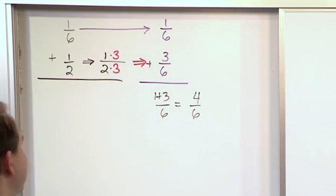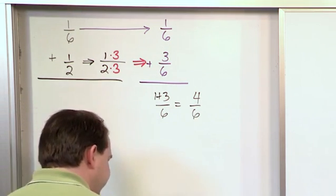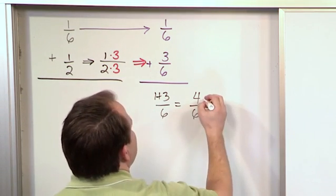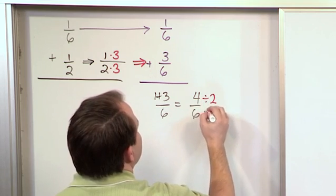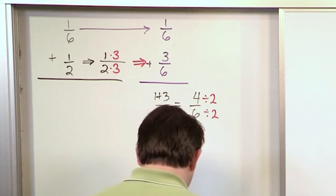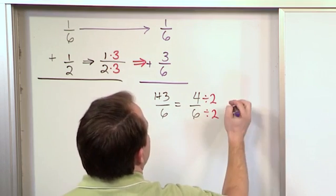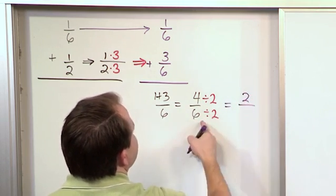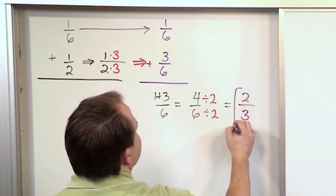But then we ask ourselves, is that fully simplified? And the answer is that it's not really fully simplified. We can divide the top by two, and we can divide the bottom by two as well. So four divided by two is two. Six divided by two is three. The answer is two-thirds.